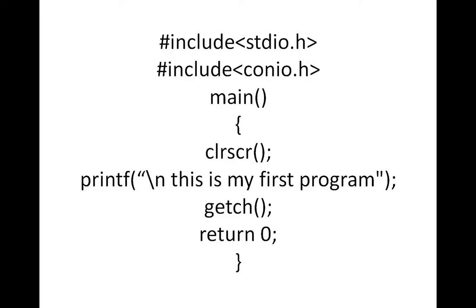We have to start the main function with open parenthesis and close parenthesis — these are called parenthesis or round brackets. The angle brackets are used in the include statements. After the main function, we have to start with the braces — curly braces.